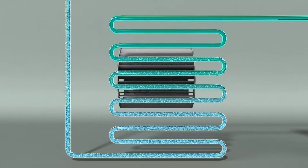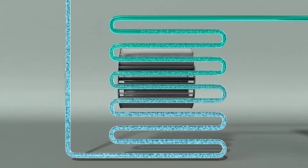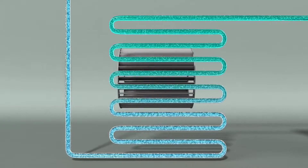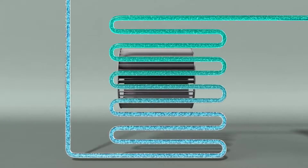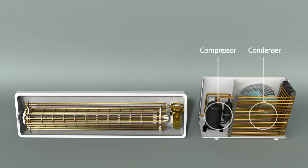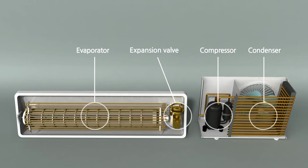The refrigerant with lowered temperature then goes into an evaporator to steal away heat. An evaporator is literally a device that evaporates liquid into gas. The cooled refrigerant steals away the heat in the room and evaporates. The compressor and condenser are built inside the outdoor unit, while the evaporator and expansion valve are built within the indoor unit of an air conditioner.